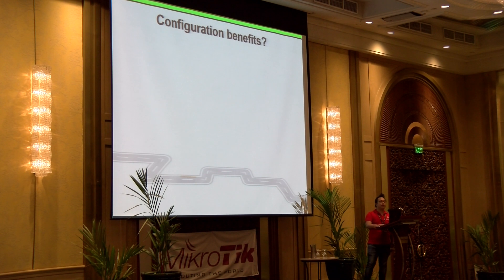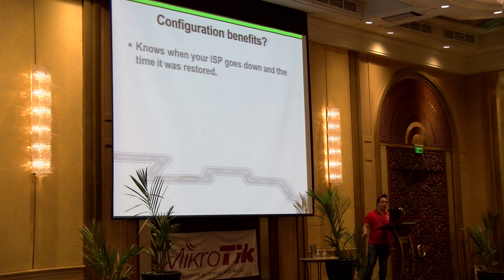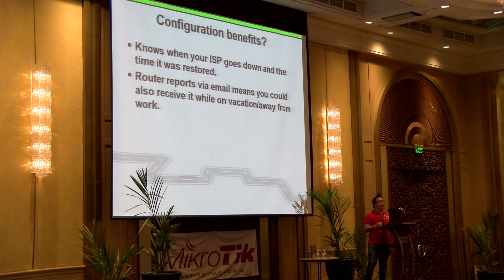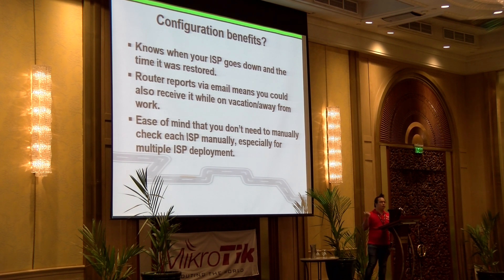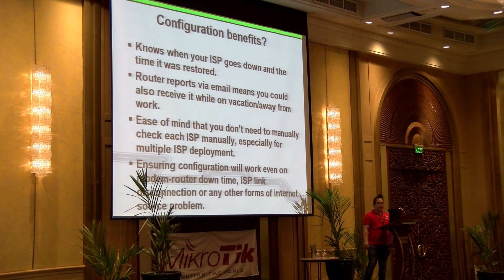What are the configuration benefits? First, you know when the ISP goes down and when it's restored. The router will report via email — meaning even if you're on vacation or away, or for example at a MUM event, you could receive an email if one of the ISPs goes down. It gives peace of mind — you don't need to manually check your ISPs, especially if you have multiple ISPs deployed. This is also useful for modem routers, directly assigned public IPs, or even triple POE — there will be no problem. Lastly, the configuration will work even if the modem router is down, or the ISP link disconnects, or any form of internet source problem occurs.